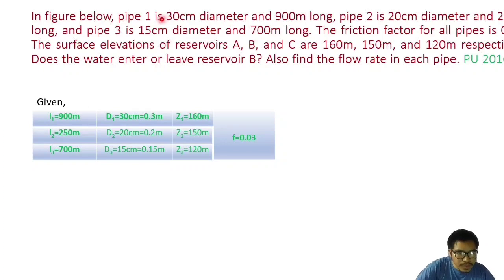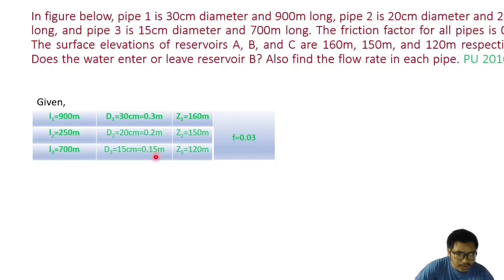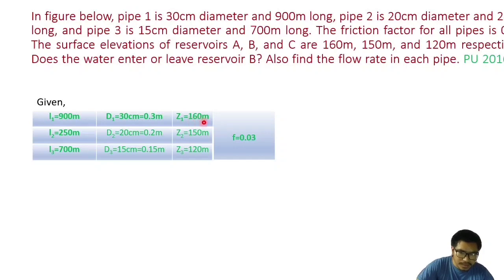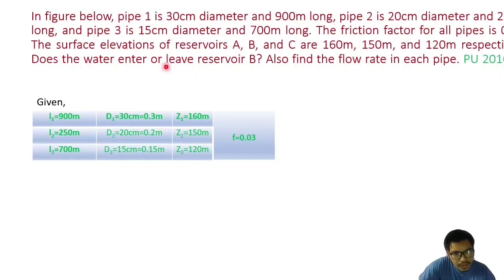Given data: Pipe 1 has length 900 meter and diameter 0.3 meter. Pipe 2 has length 250 meter and diameter 0.2 meter. Pipe 3 has diameter 0.15 meter and length 700 meter. The friction factor is 0.03 for all three pipes. Surface elevation of reservoir A is Z_A = 160 meter, Z_B = 150 meter, and Z_C = 120 meter.